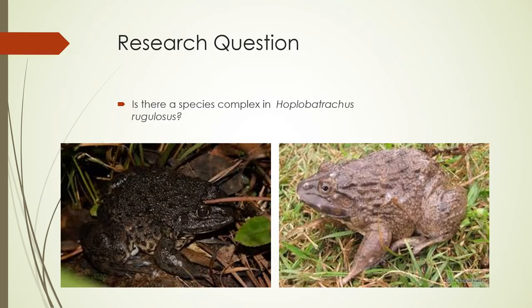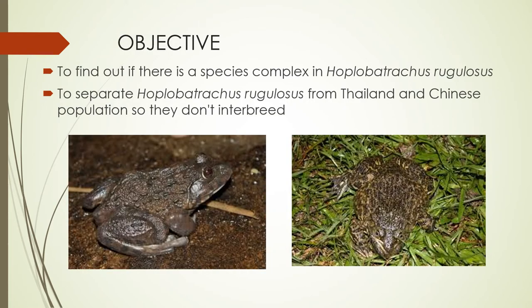The research question is: is there a species complex in Hoplobatrachus tigerinus? The objectives are first to find out if there is a species complex in Hoplobatrachus tigerinus, and then to separate the Hoplobatrachus tigerinus from Thailand and Chinese populations so they don't interbreed, because the Chinese population is a protected species and we don't want it to produce defective hybrids.